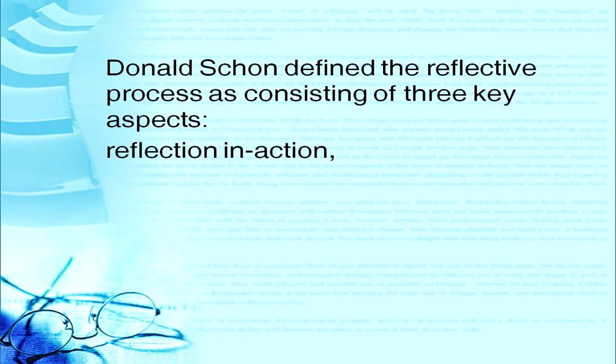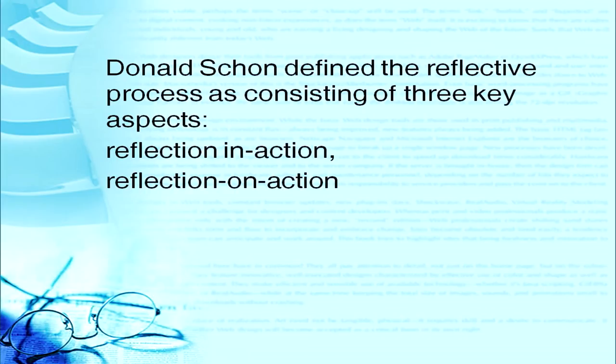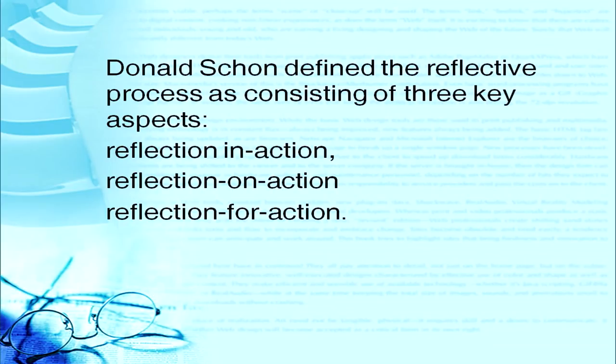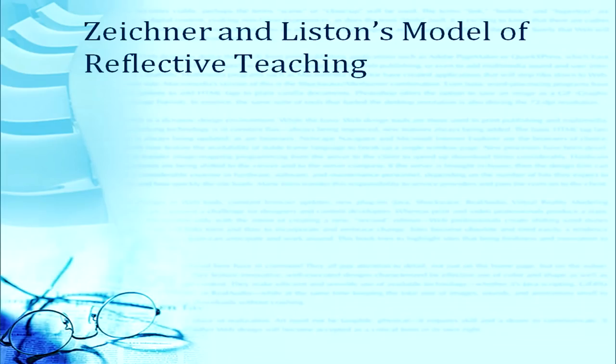Donald Schon defined the reflective process as consisting of three key aspects. First is reflection in action — while teaching in the class, I find that my question has not brought many responses from students, meaning something is wrong, and I have to improve right then. Then reflection on action — this takes place before I enter the class and when I come back from the class. Then reflection for action — for improvement, for thinking of new strategies and new actions I may take in future so that my class is good.